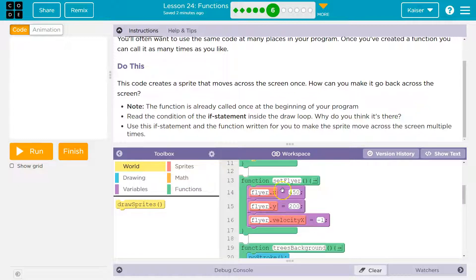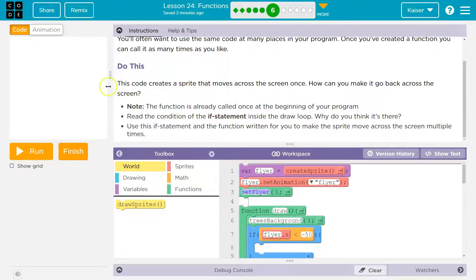Trees background. Right. We run this. How do we start our character way over here? We started using set flyer. That's how we start the program with our character over on that side.